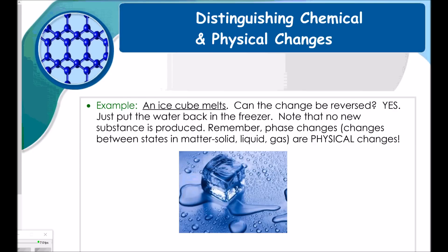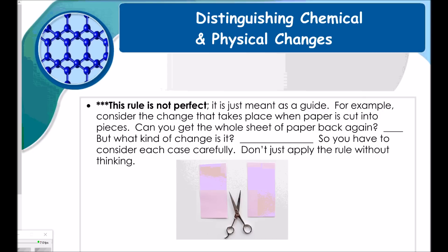A useful rule of thumb for distinguishing physical from chemical changes: ask yourself, can the change be reversed? If yes, it's probably physical. If no, it's probably chemical. Milk souring can't be reversed — that's chemical. An ice cube melting can be reversed by putting the water back in the freezer — that's physical. Note that this rule is not perfect. For example, cutting paper into pieces can't be reversed, but it's still a physical change because no new substance was formed — it's still paper.